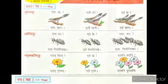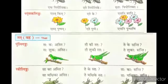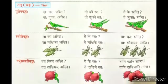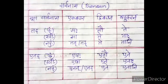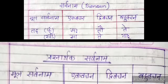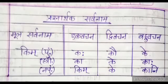Let us start to make sentences using pronouns in plural forms. First, I show here the plural form of the basic pronouns tat, etat, and the prashnarthak pronoun kim.